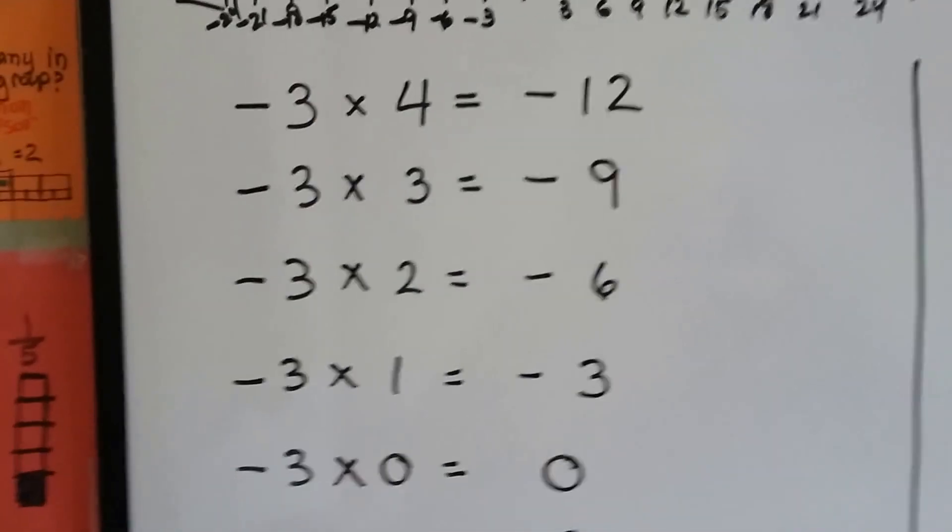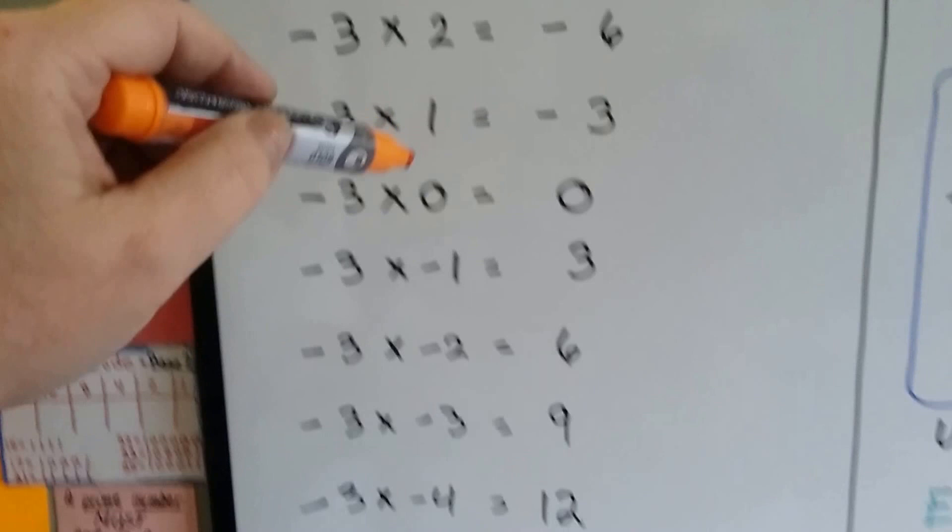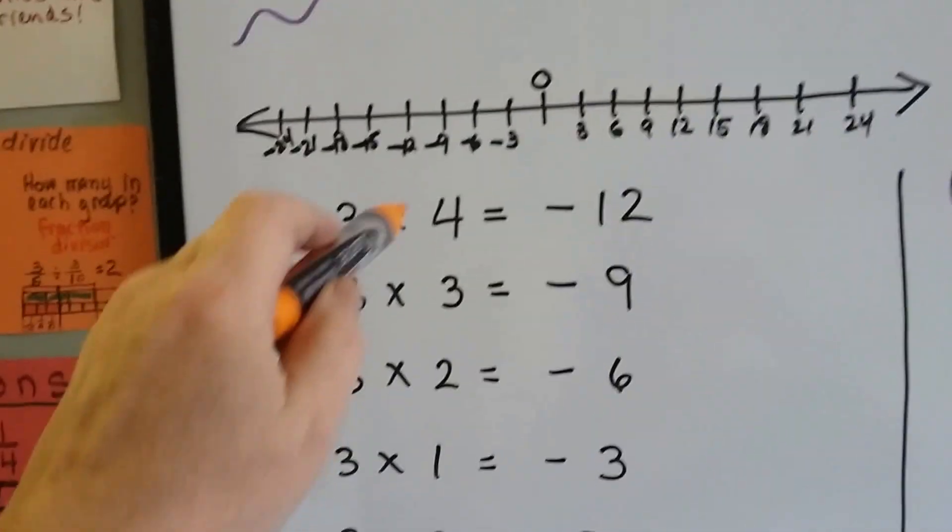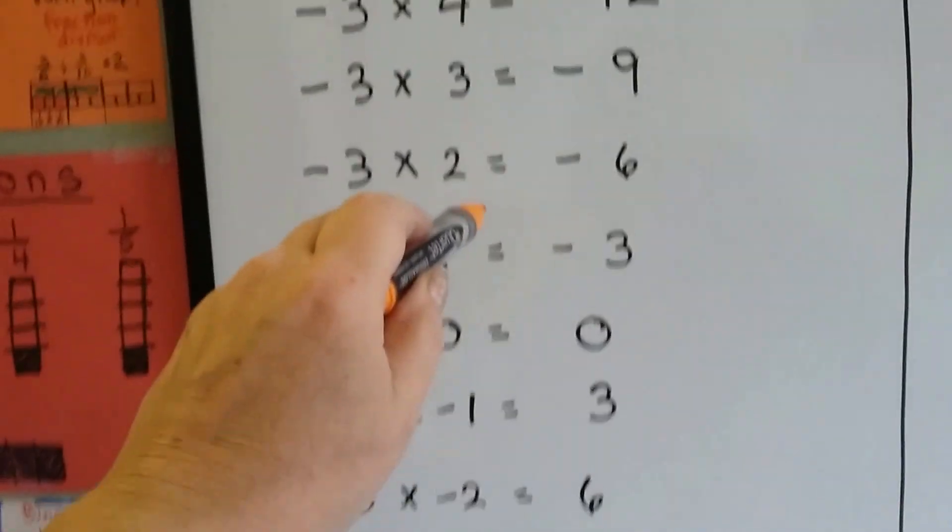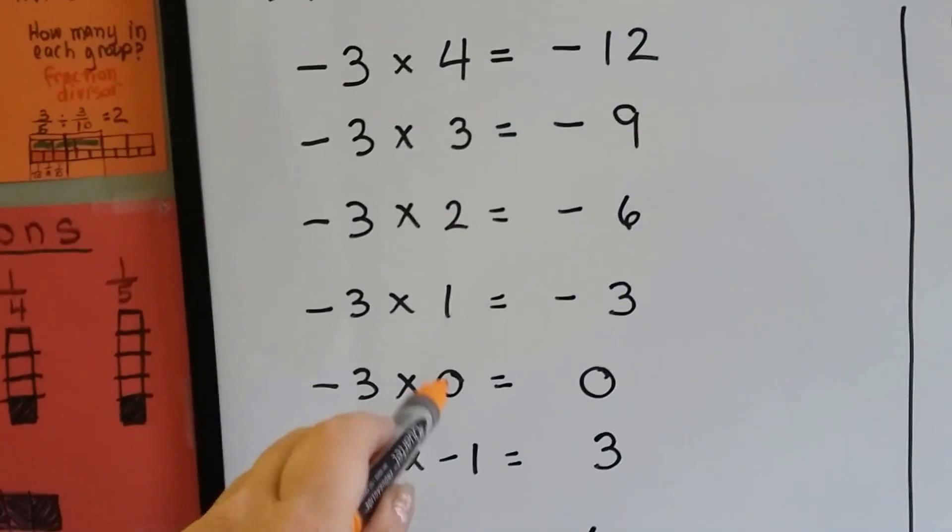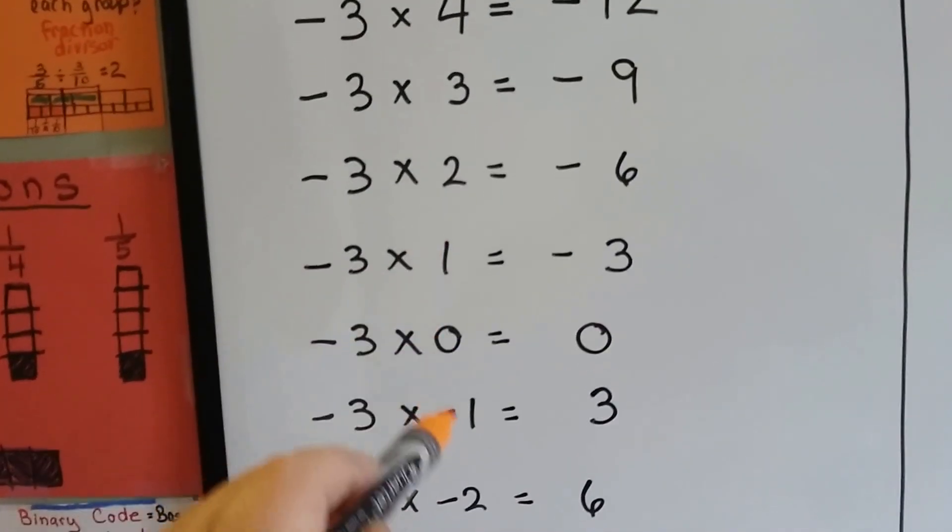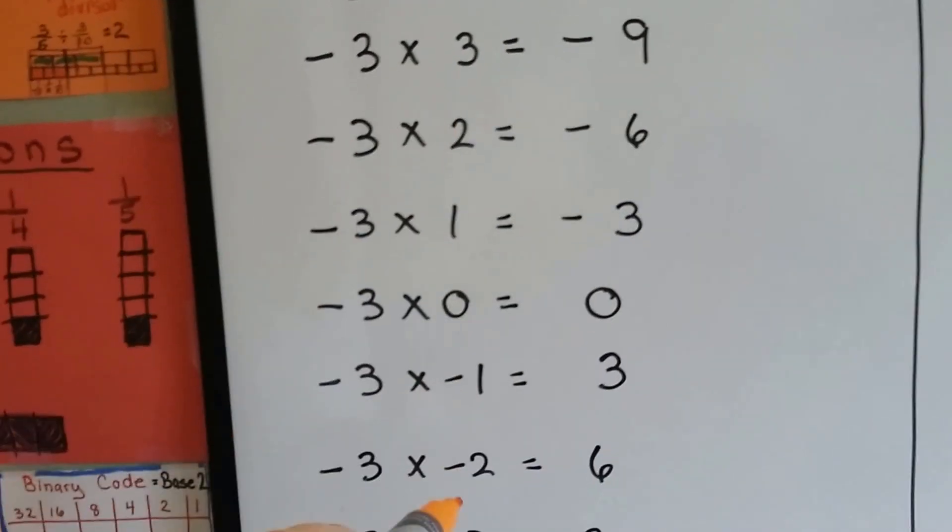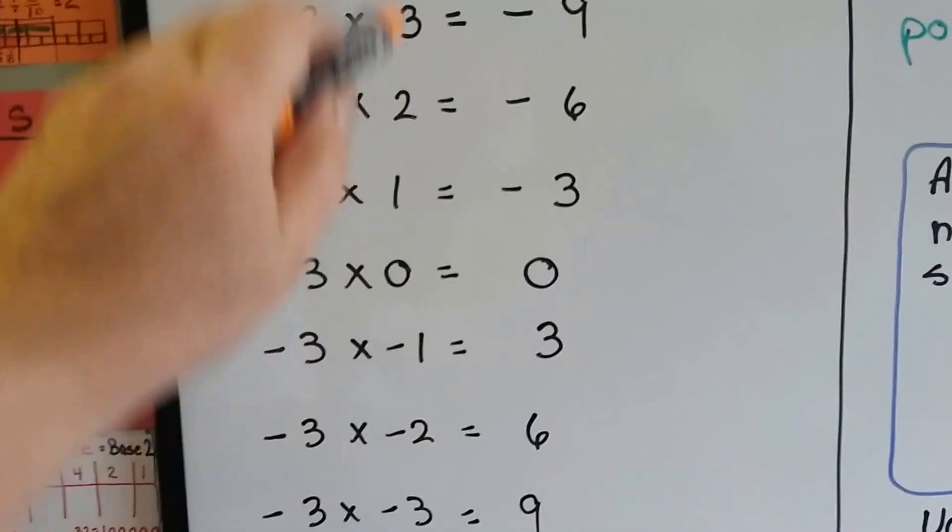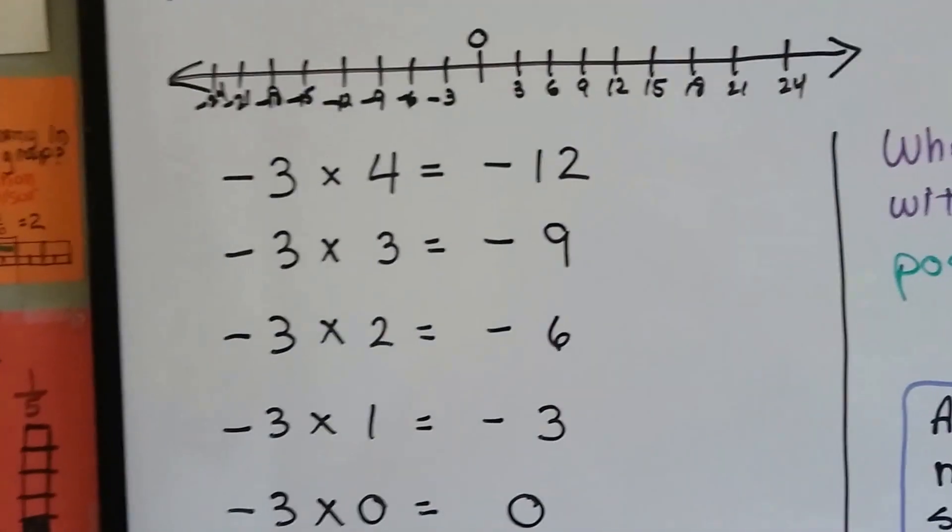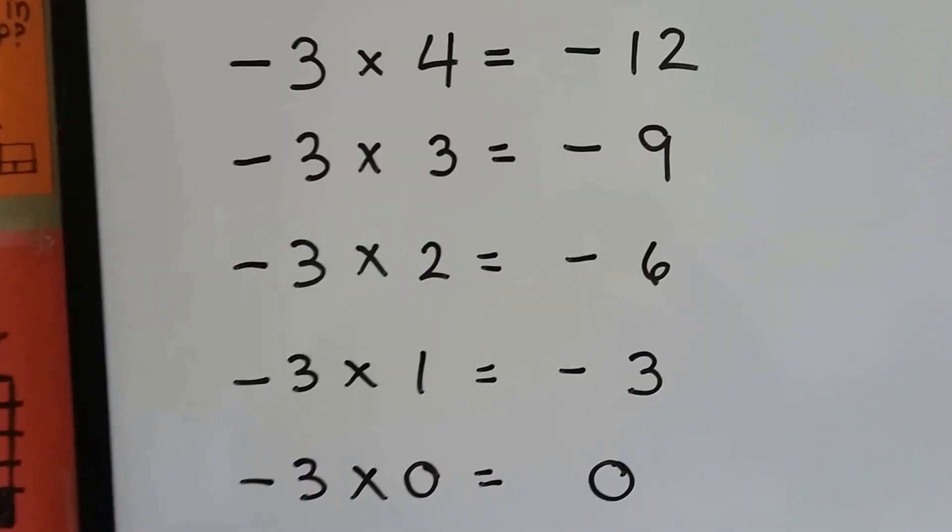So watch our times table. As we come down here, I want you to think of this row here, the number we're multiplying. I want you to think of it as the number line, because here's the 0, here's positive 1, here's negative 1, here's positive 2, here's negative 2. Here's positive 3, here's negative 3. So this second number we're multiplying is sort of like this number line.